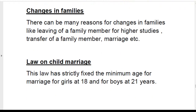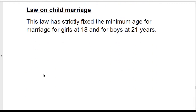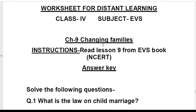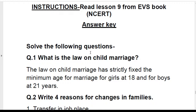Law on child marriage: the minimum age for marriage has been fixed. Girls should be at least 18 years old and boys should be at least 21 years old for marriage. Marrying below these ages is a punishable offense. Please underline the minimum ages — 18 for girls and 21 for boys.